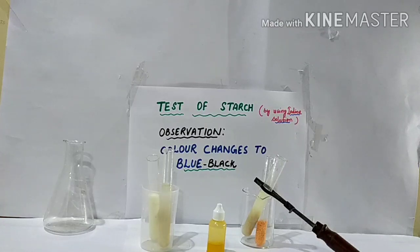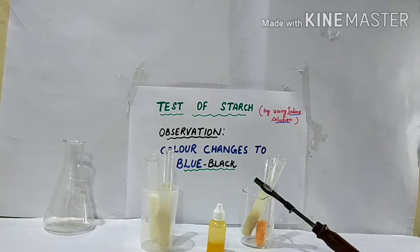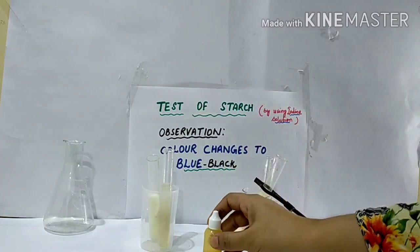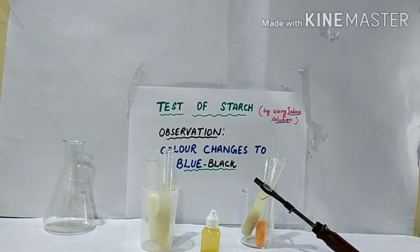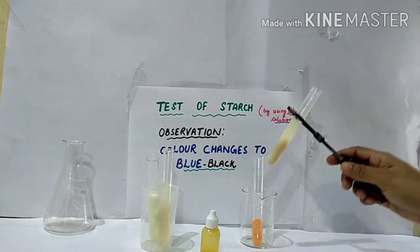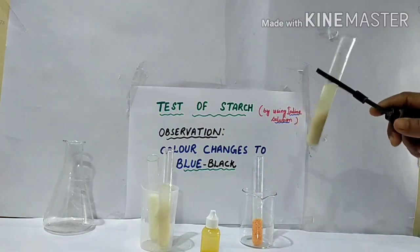Good morning students. Today I am going to show you the presence of starch in food items. To test the presence of starch, we need iodine solution, which I have taken. If the color of the food changes to blue-black, it means that particular substance contains starch. So for the test, I have taken wheat flour.